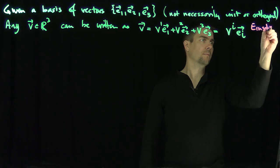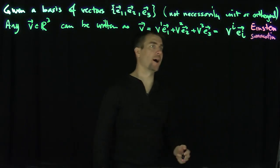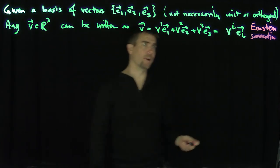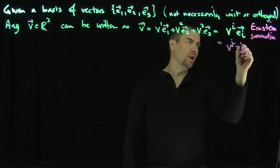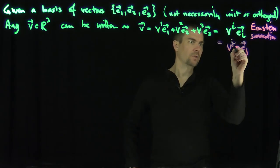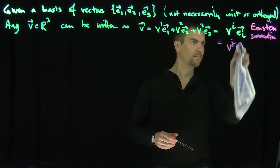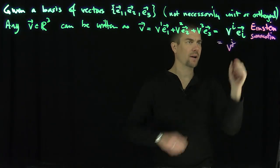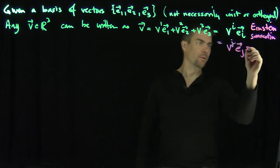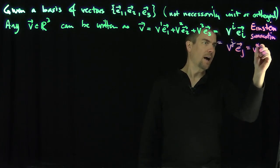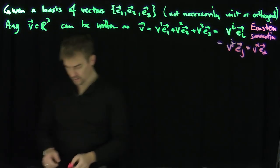In Einstein summation, I can use any index I want — it's a dummy index. So this can equally be written as v^j · e_j, or v^α · e_α. It doesn't matter what index I use, as long as it's summed over. It's a dummy index.